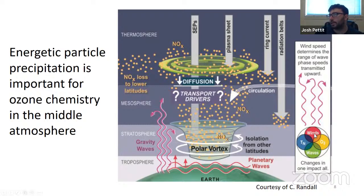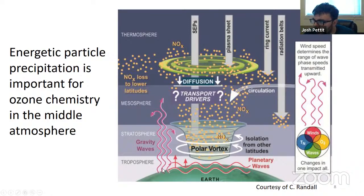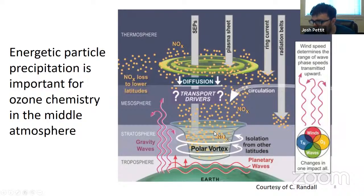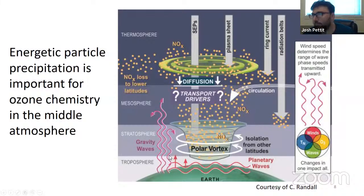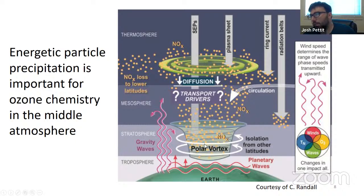Why this is important is because it can modify the wave activity in the stratosphere. These squiggly lines in purple and red show gravity waves and planetary waves respectively. By modifying the temperature and wind structure of the stratosphere, you actually modify the gravity waves coming up from the troposphere. And we've noticed that gravity waves can have impacts on the ionosphere. By modifying or amplifying these gravity waves in the stratosphere, you can impact the ionosphere-thermosphere system through the changing of the chemistry of the stratosphere.